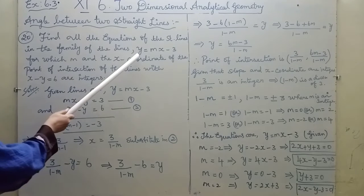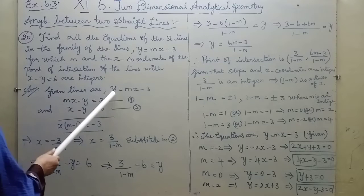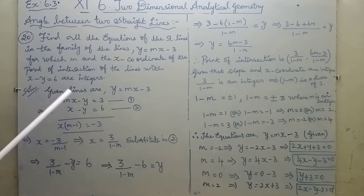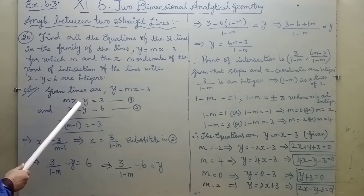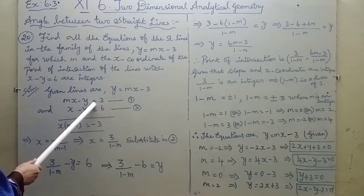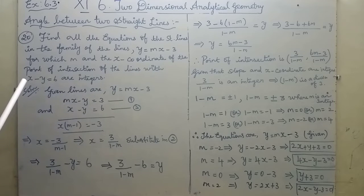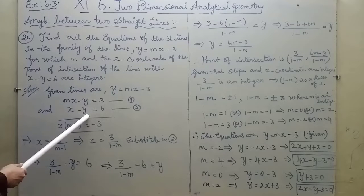We have to solve the equations. The given lines are y = mx - 3. Rewriting: mx - y = 3. The second equation is x - y = 6. We have to solve both equations together.